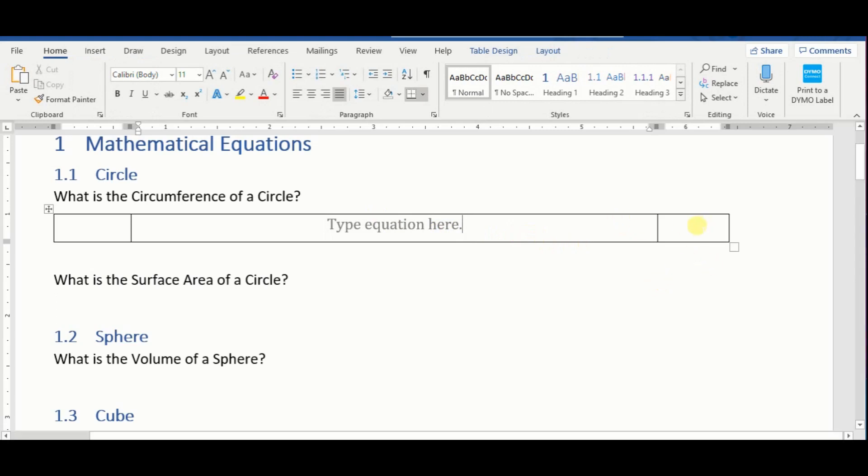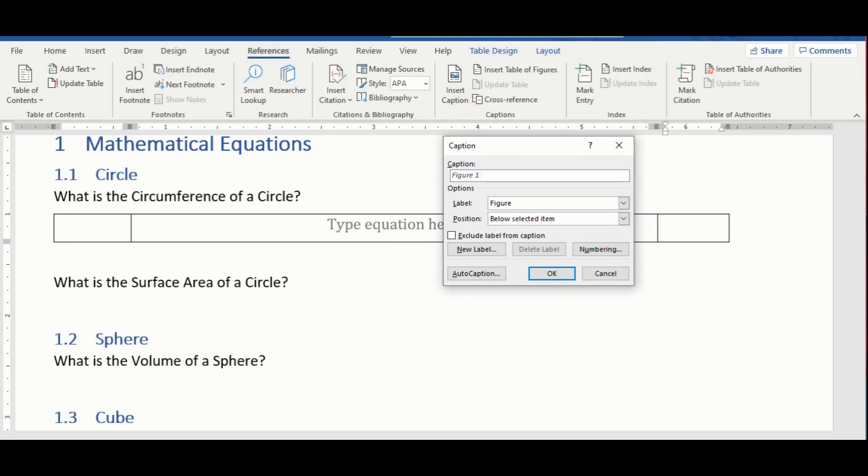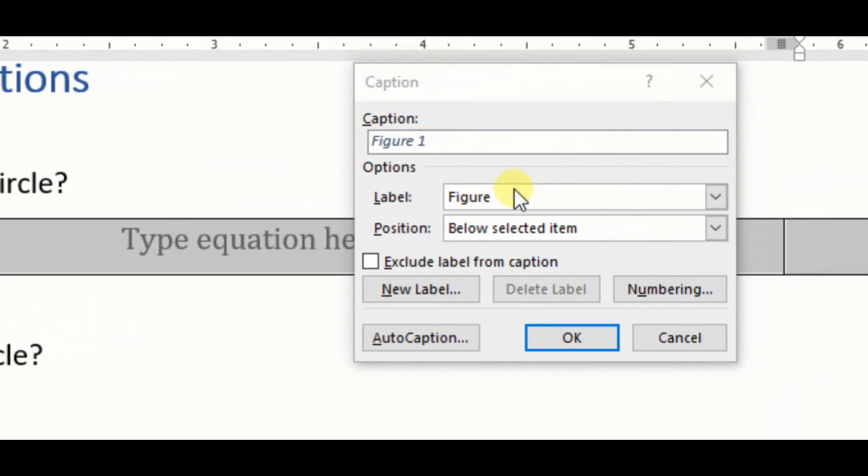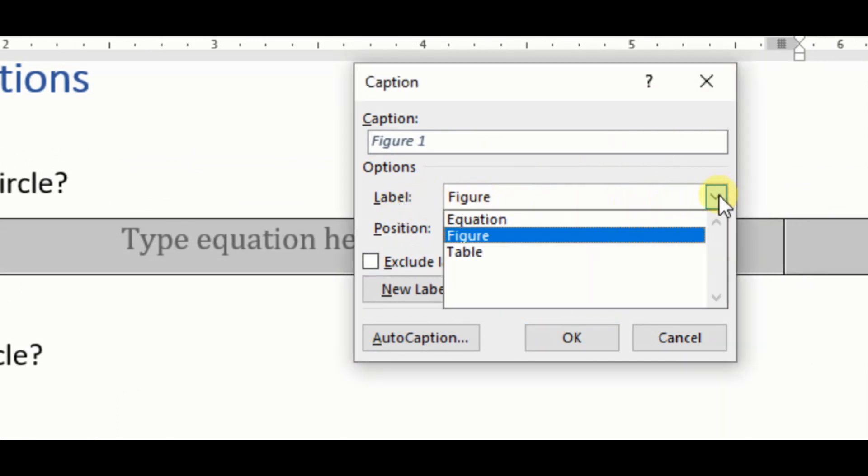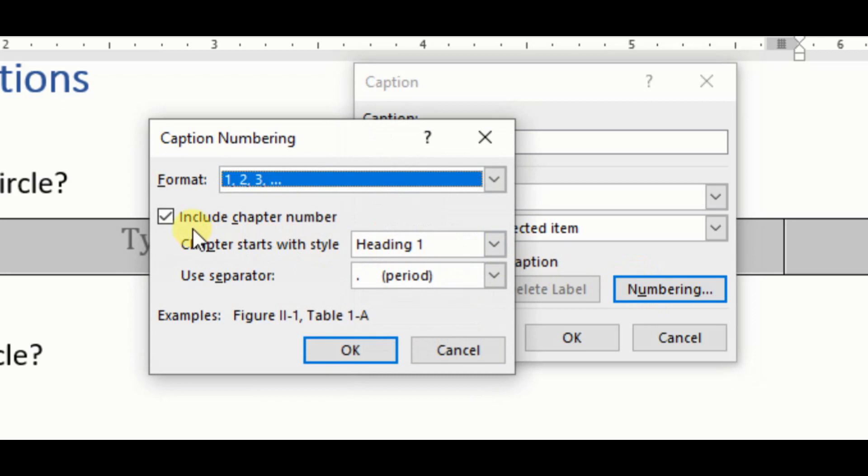For the equation number, we click on the third cell. Then this time, we're gonna go to references, and then we're gonna select insert caption. All right, so since we're working with equations, we're gonna go to label right here, and we're gonna change it to equation. Now make sure that exclude label from caption is checked, and then for numbering, make sure that include chapter number is checked right here.